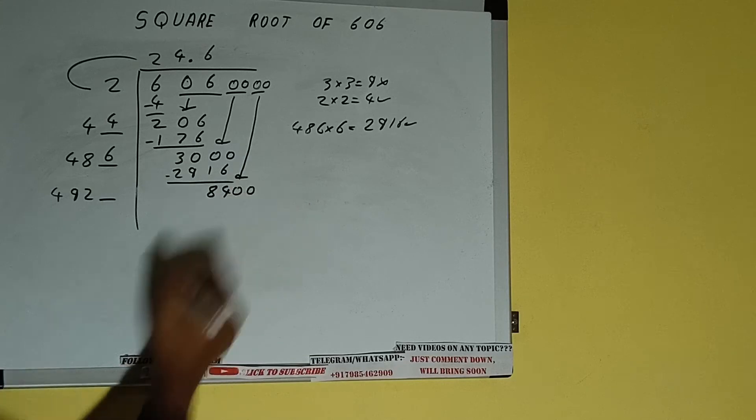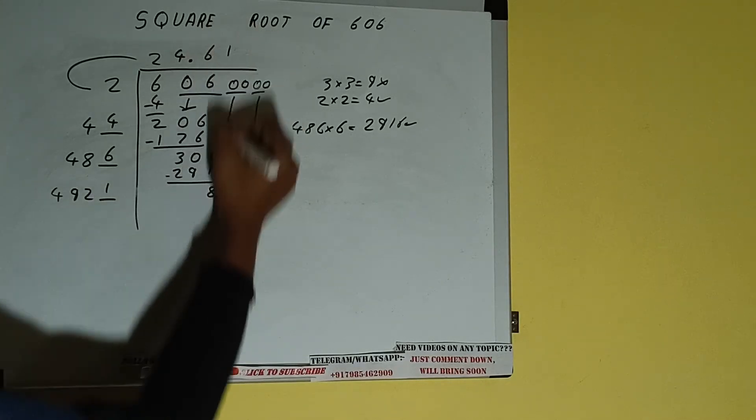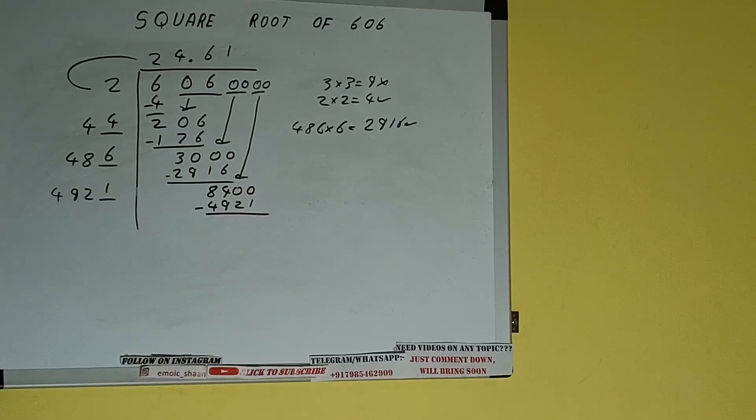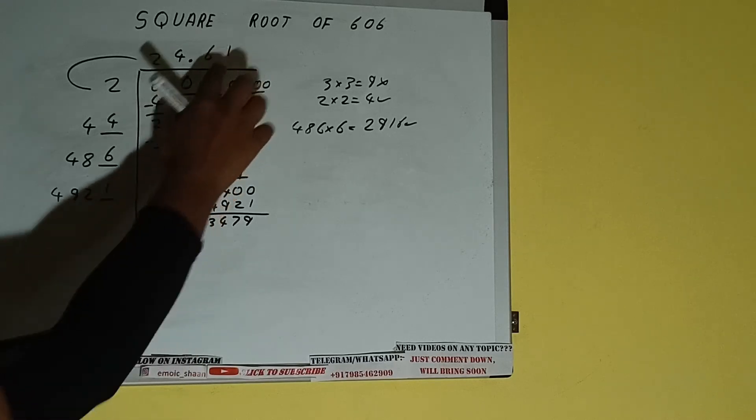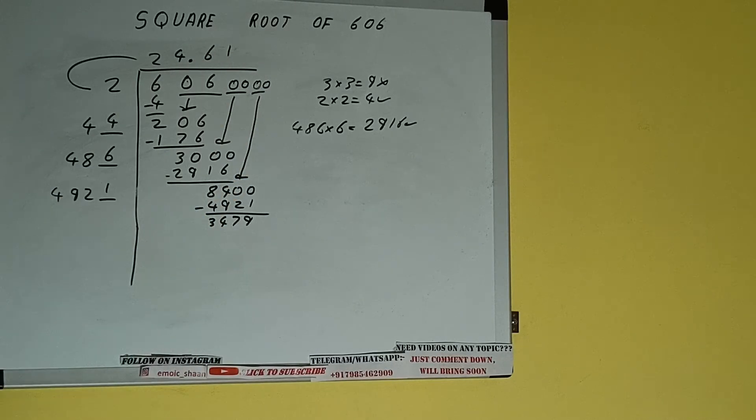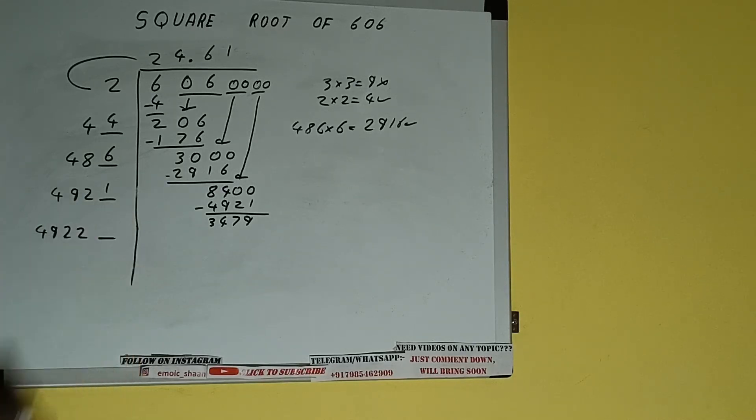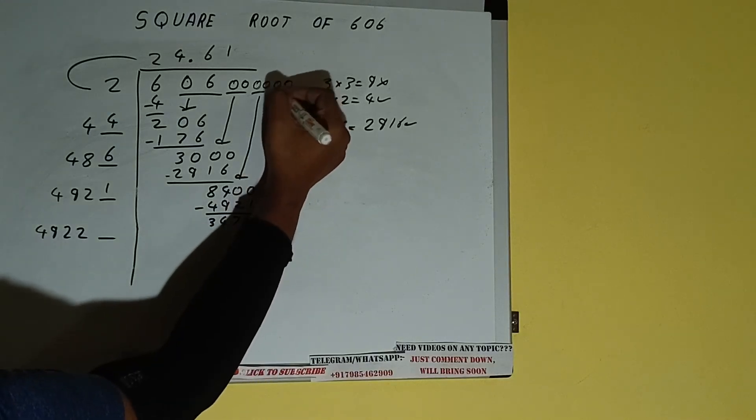Now we can try one time. One here and one here. 4921 subtract, and we'll be having 3479. Now 4921 into one we did, so add both. 4921 plus one will be 4922 and one digit extra. This number we need to make it big, so bring the next pair of zeros down.